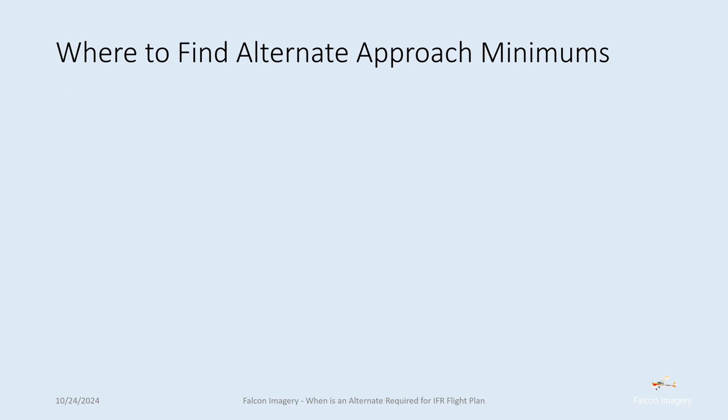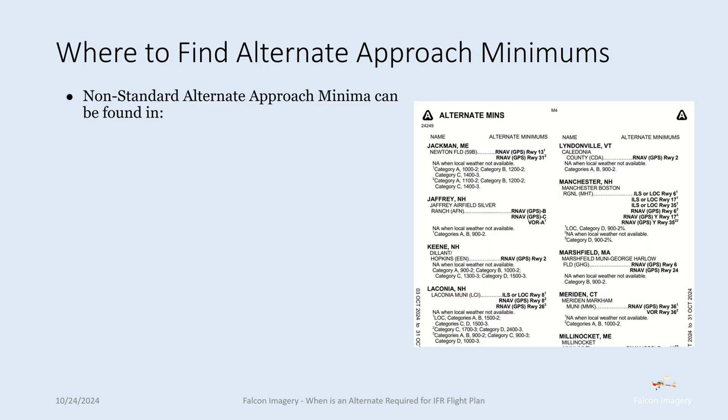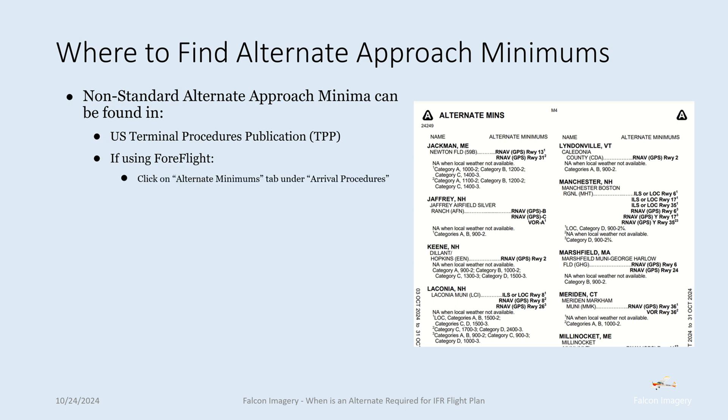So where can we find these alternate approach minimums? Non-standard alternate approach minima can be found in the U.S. Terminal Procedures publication, or if you're using something like ForeFlight, just click on the alternate minimums tab under the arrival procedures, and then look for the associated city that you're planning to come in at, and you can find the required minimums.